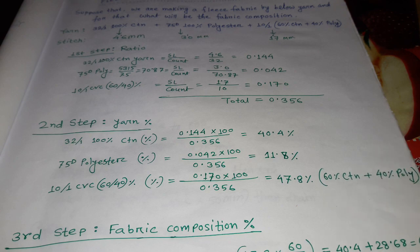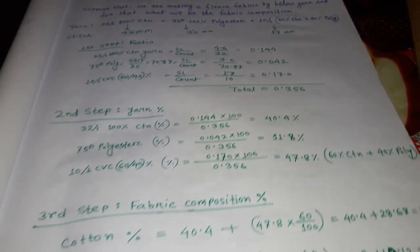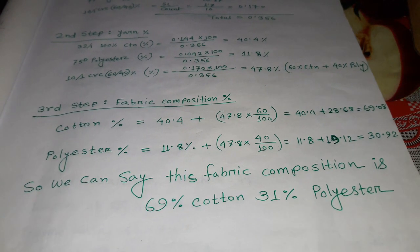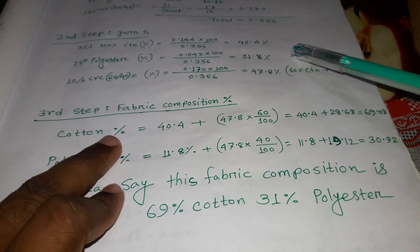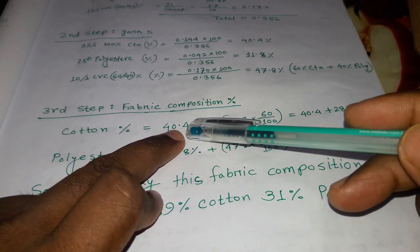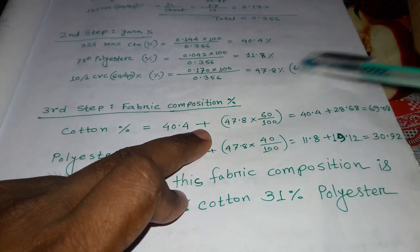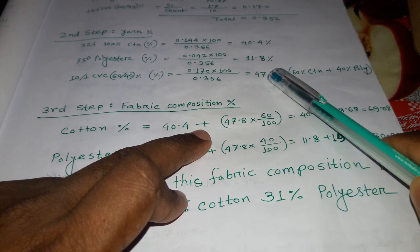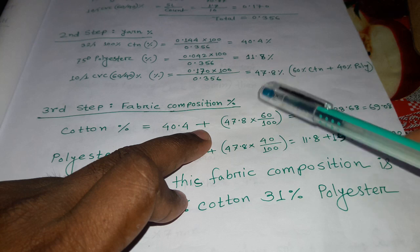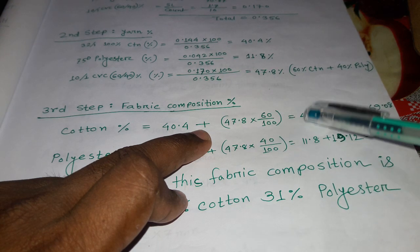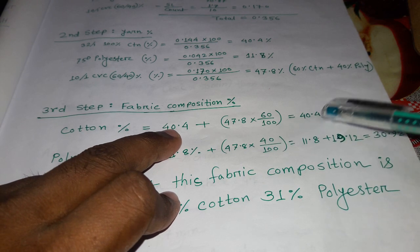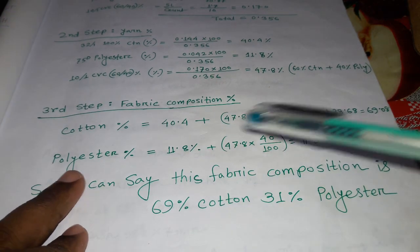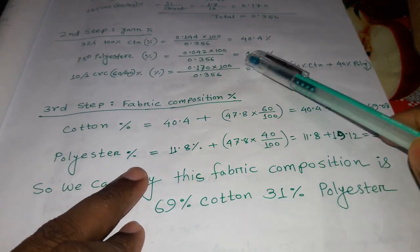In the third step, we calculate the overall fabric composition. Cotton percentage equals: 40.4% (from 32 single cotton) plus the cotton portion from the CVC yarn: 47.8% × 60/100 = 28.68%. So total cotton = 40.4 + 28.68 = 69.08%.